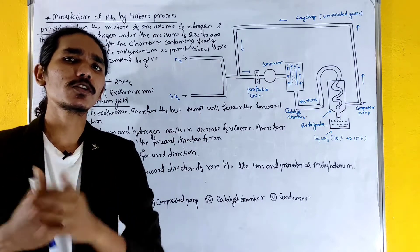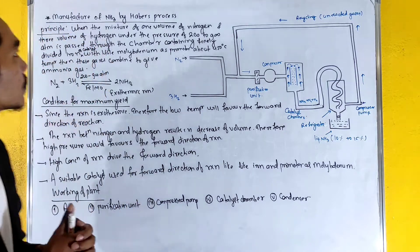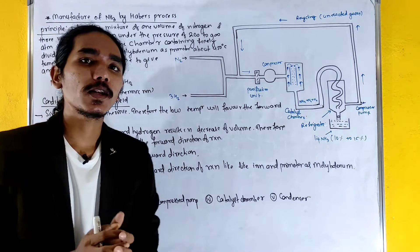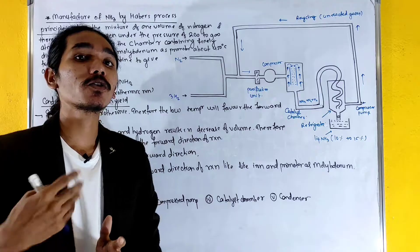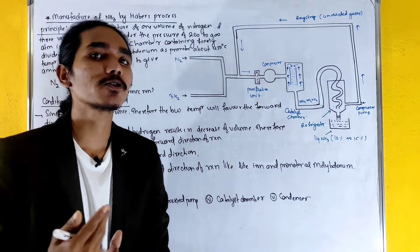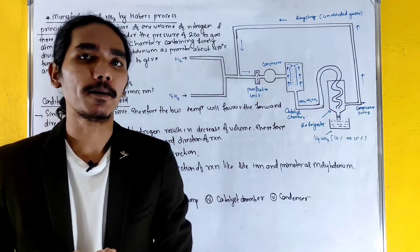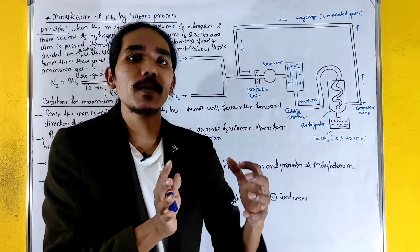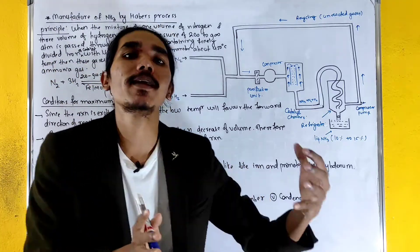What is the process of Haber's process? It is a commercial production of ammonia at an industrial level. We are using ammonia.